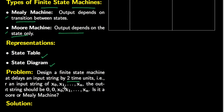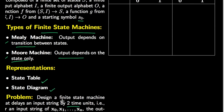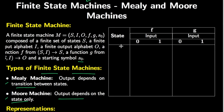For example, if we have an input x0, x1, up to xn, the output is 0, 0, then x0, x1, up to xn. So the first two outputs are 0s and then we start repeating the symbol which came two time units earlier. In the end we also have to determine whether it is a Moore machine or a Mealy machine.